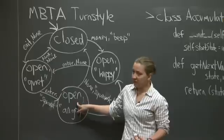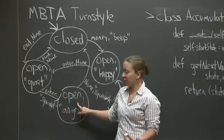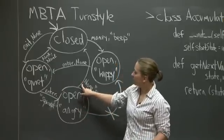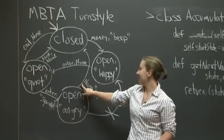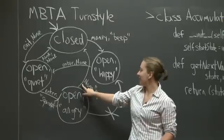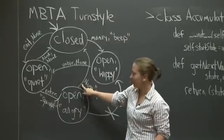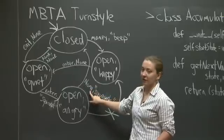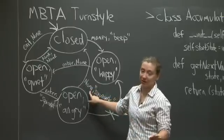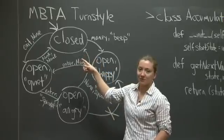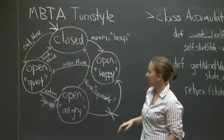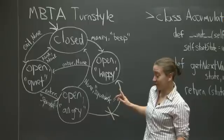And then the new state is going to be that the turnstile is open and angry. At that point, you and I know that the turnstile is going to close. So this edge indicates that the only available input at that point is to do nothing or independent of anything else. It's going to swap again and close.